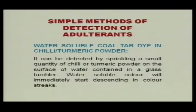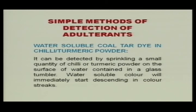Another type of coal tar dye added is water-soluble dye in turmeric powder. There are two types: oil-soluble and water-soluble. Water-soluble dye can be detected by sprinkling a small quantity of chili or turmeric powder on the surface of water in a glass tumbler — water-soluble color will immediately start descending in color streaks. For methylene yellow color in parboiled (cellar) rice, rub a few grains in the palms — yellow color will reduce or disappear. Add a few drops of dilute hydrochloric acid to a few rice grains mixed with a little water. Presence of pink color indicates presence of methylene yellow color in cellar rice.